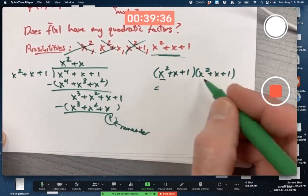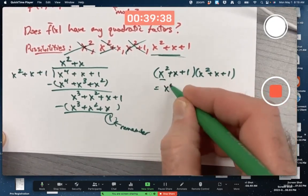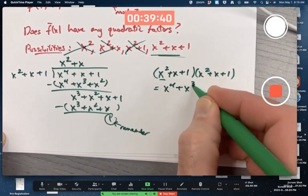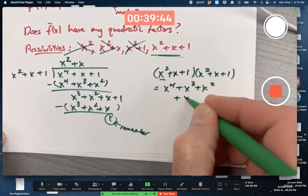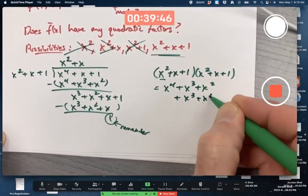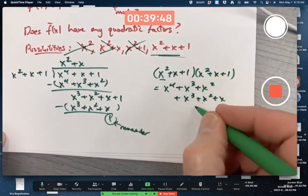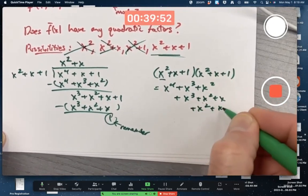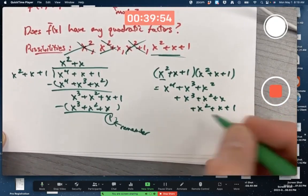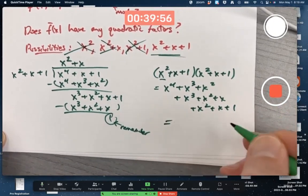Take x squared here and multiply it times each term. Then go to the x term and multiply it times each term and put the answer underneath. Then go to the 1 and multiply it times each term and put the answer underneath.